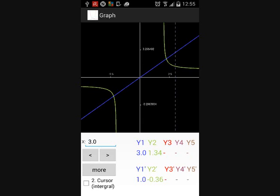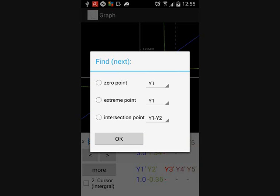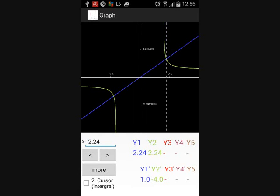Now we are interested in determining the intersection point of the graphs. Click the more button, choose the intersection point option, and the cursor will jump to the intersection point. Its position is 2.24.